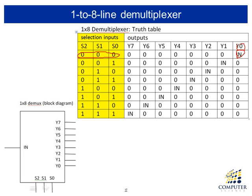If input is zero, output zero is zero; if input is one, output zero is one. If selection input is zero-zero-one, then input is connected to Y1. If selection is one-zero-one, then input is connected to Y one, and so on. This is the demultiplexer.